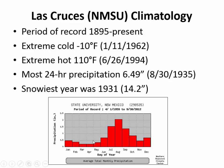Then if you look toward later in the year, we see the monsoon with larger amounts of rain. In July on average we get about an inch and a half. In August, which is our wettest month in Las Cruces, we get just a little bit over two inches falling at NMSU. Rounding out the end of the monsoon, we get more than an inch of rain falling in September.